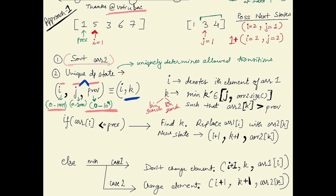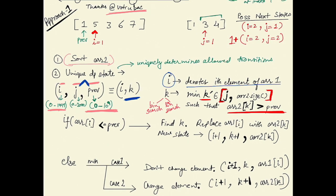We reduce the state to (i, k), where i is the i-th element of array1, and k denotes the minimum index k' in the sorted array2 such that array2[k'] is greater than previous. This gives us a unique 2D DP state.